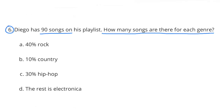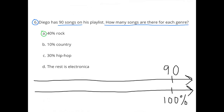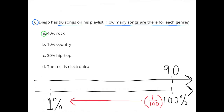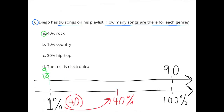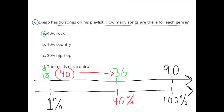Number 6: Diego has 90 songs on his playlist. How many songs are there for each genre? A: 40% rock. I made a double number line with 90 songs above 100%. I multiplied by 1 over 100 to turn 100% into 1%, and multiplied 90 by 1 over 100 to get 90 hundredths, which equals 9 tenths. Then 9 tenths times 40 equals 36. His playlist has 36 rock songs, which is 40% of his 90 songs.